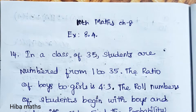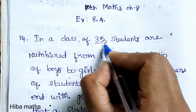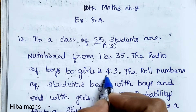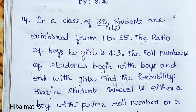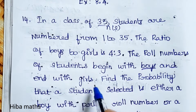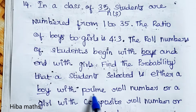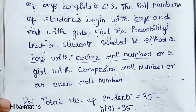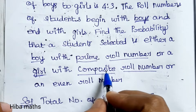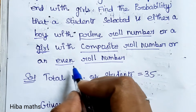Hello students, welcome to Hibamax 10th standard, Chapter 8, Exercise 8.4, 14th question. In a class of 35 students, they are numbered from 1 to 35. The ratio of boys to girls is 4 to 3. The roll numbers of students begin with boys, so boys have the first roll numbers, and end with girls. Find the probability that a student selected is either a boy with a prime roll number, or a girl with a composite roll number, or an even roll number.